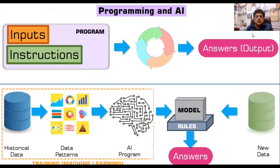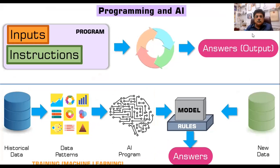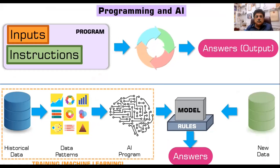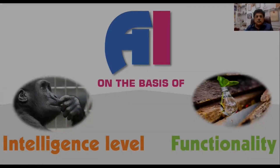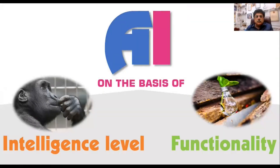So as I was discussing, the difference between traditional programming and artificial intelligence is that in AI the program learns from exposure to data, creates a model, and that model is used to process new data and generate answers. Now when we talk about artificial intelligence, on the basis of intelligence level and functionality, there are various types of artificial intelligence. Let's have a quick view.